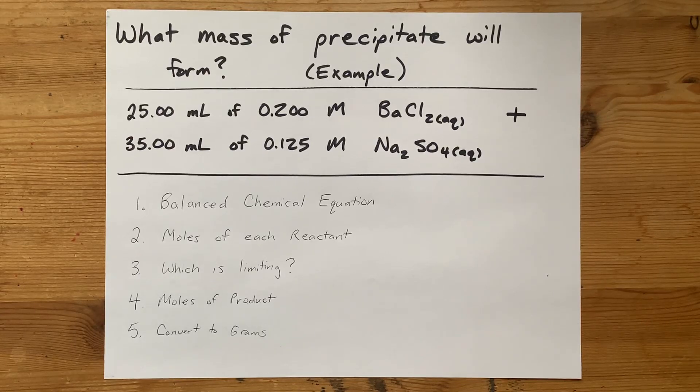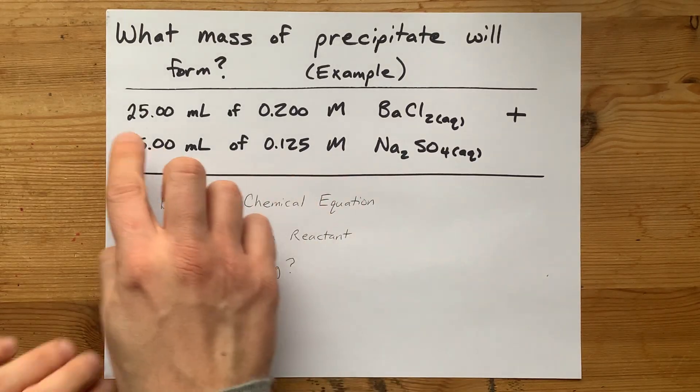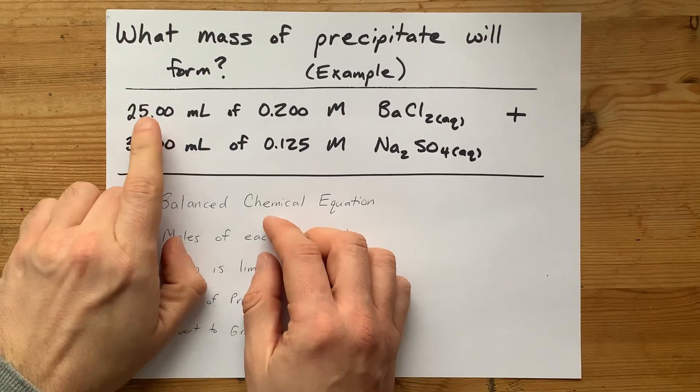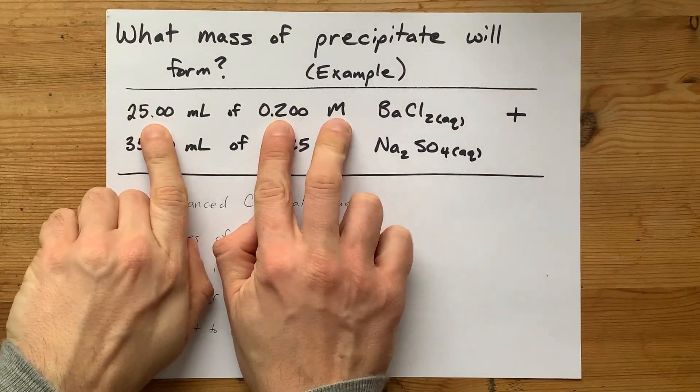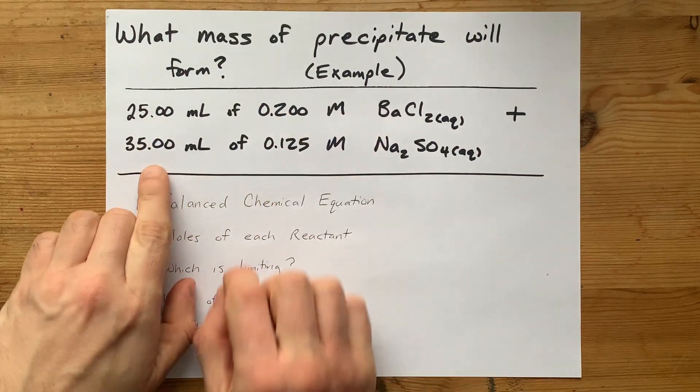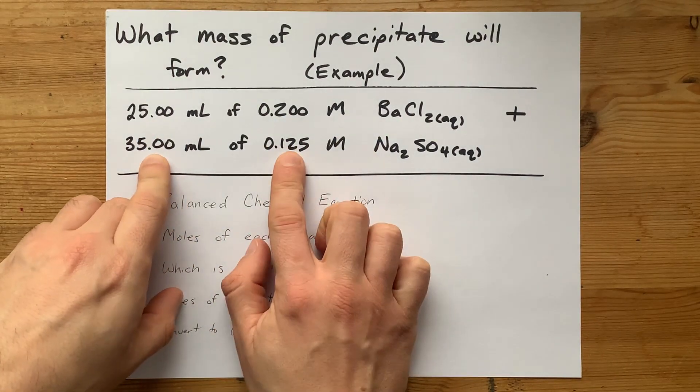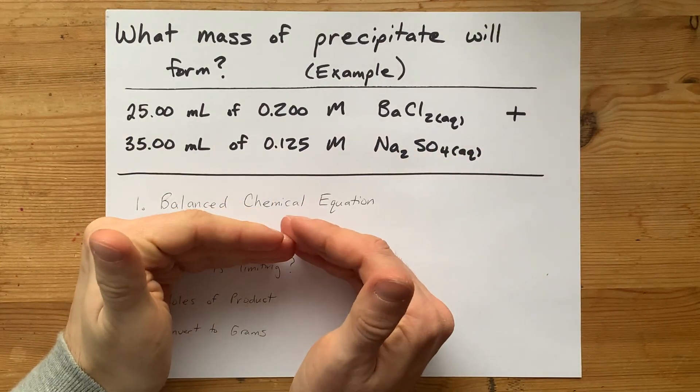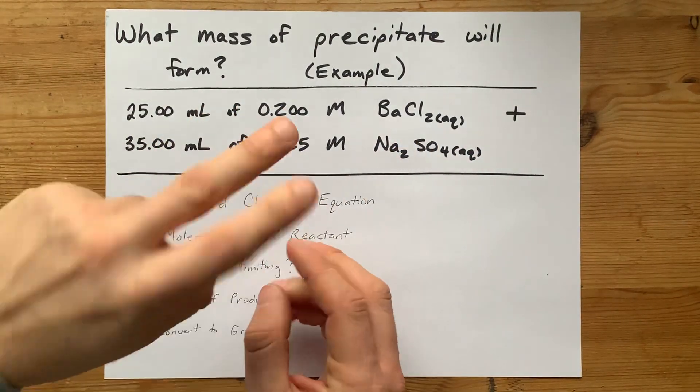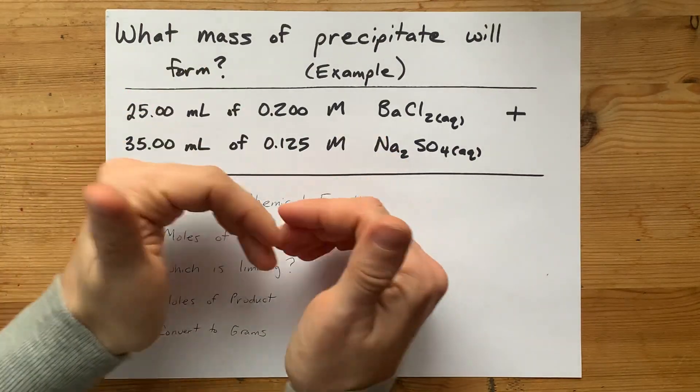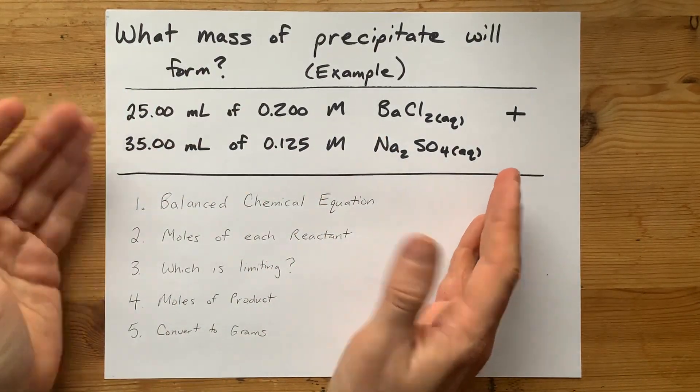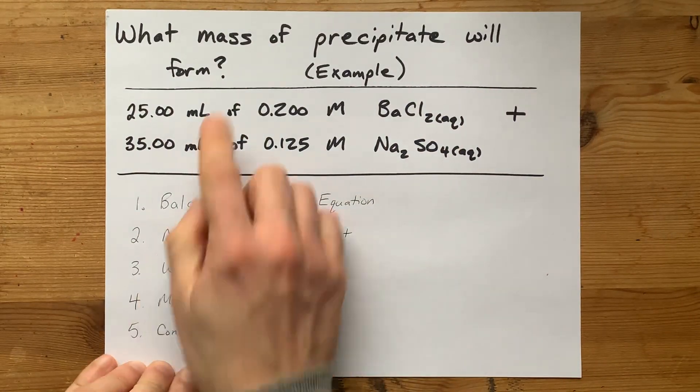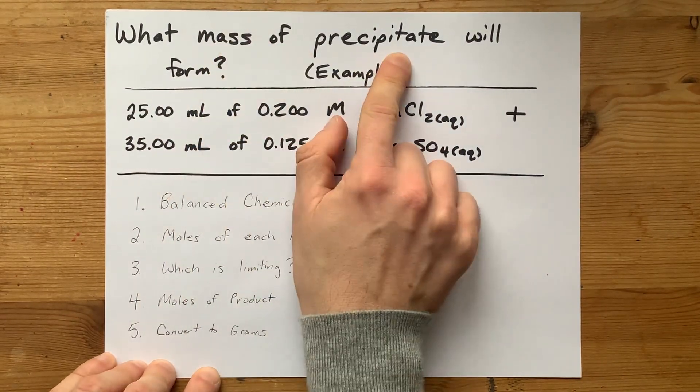All right, you're being asked what mass of precipitate will form when you mix two solutions. I stole this one from online. I've got 25 milliliters of 0.2 molar barium chloride reacting with 35 milliliters of 0.125 molar sodium sulfate. When you combine these two solutions, you're going to get a mixture of ions and two of those ions can't coexist in the same solution. You're going to get a solid falling out.